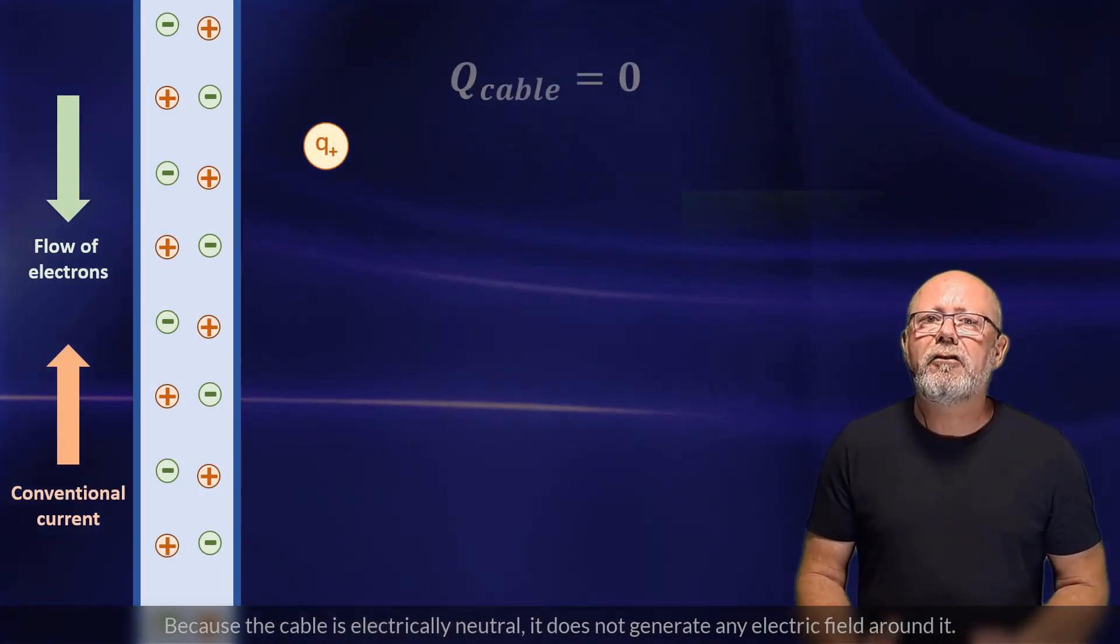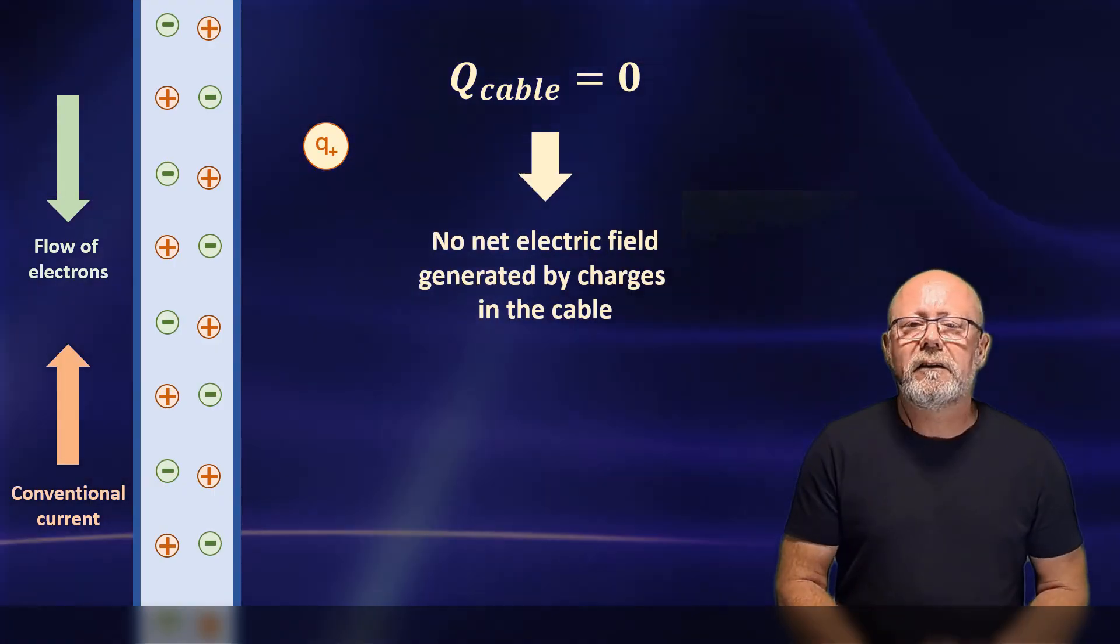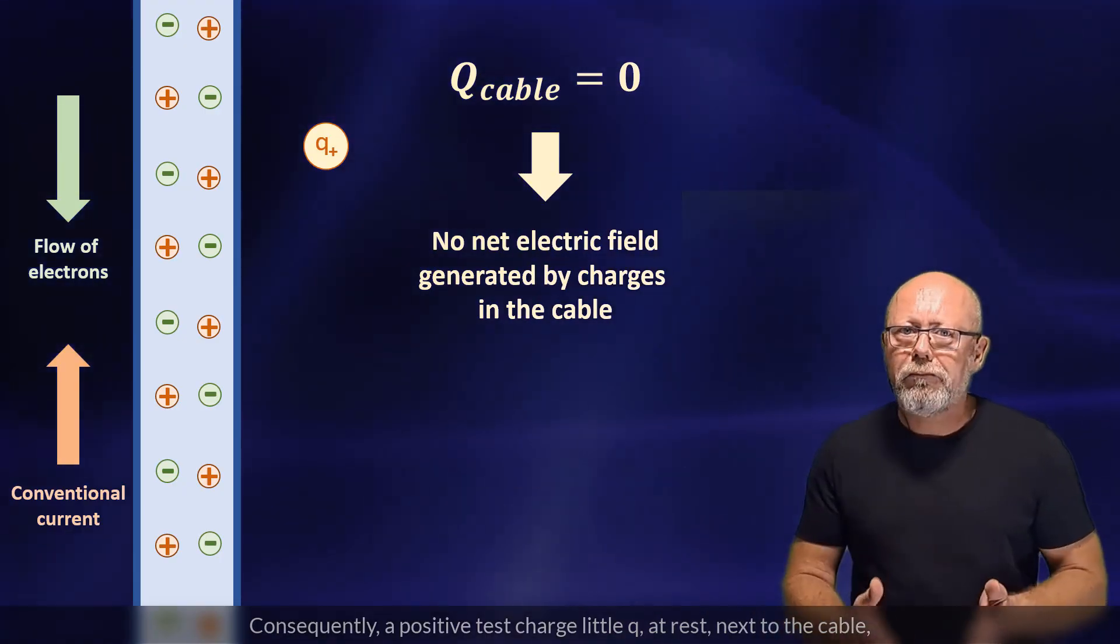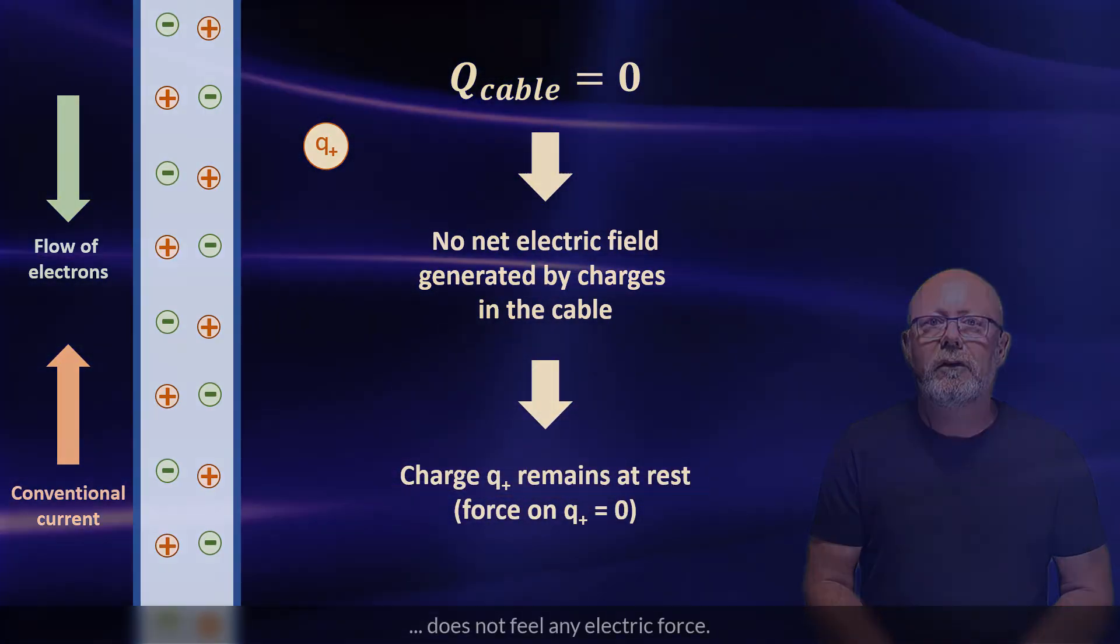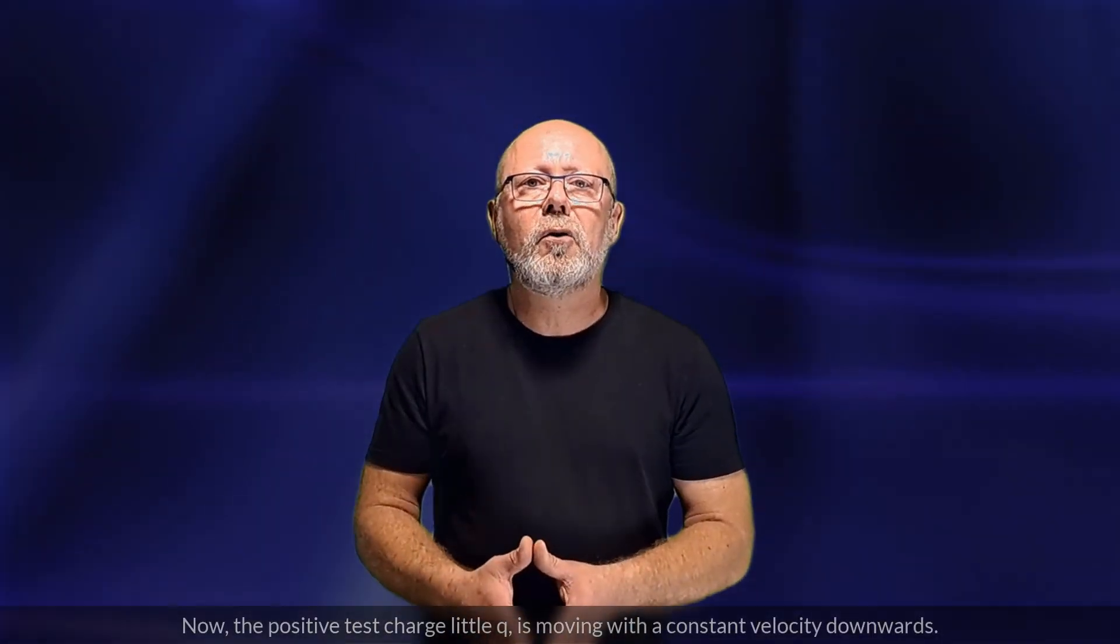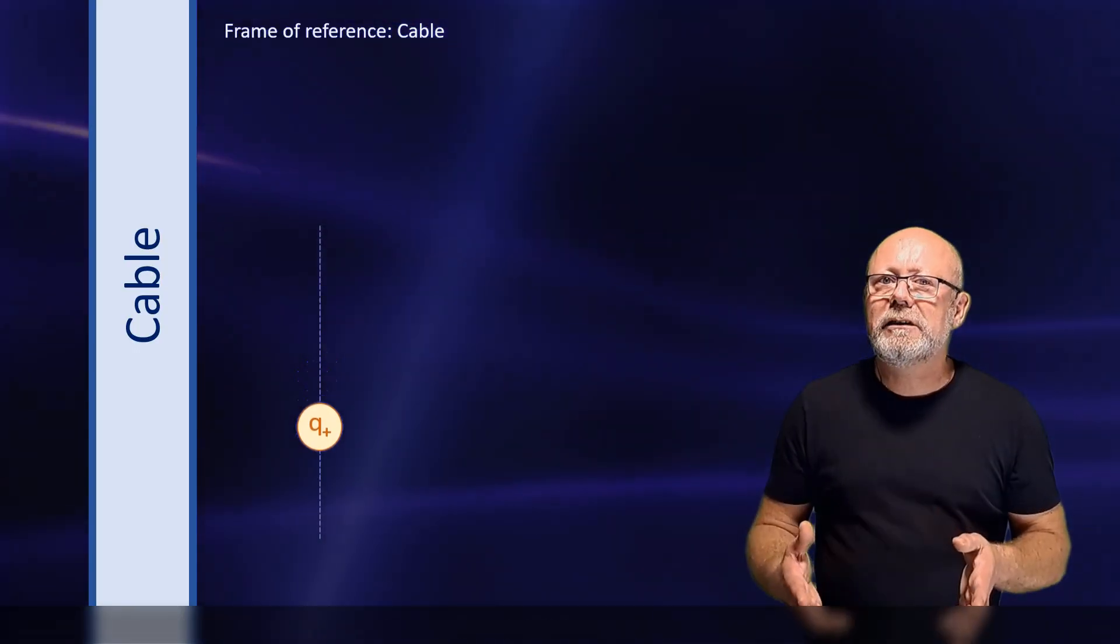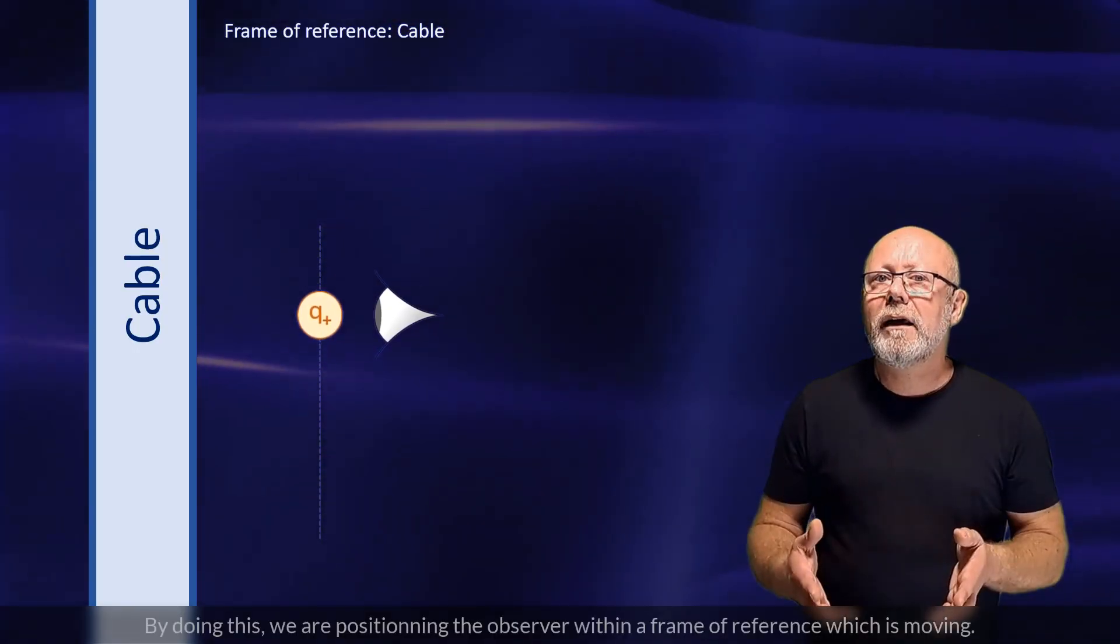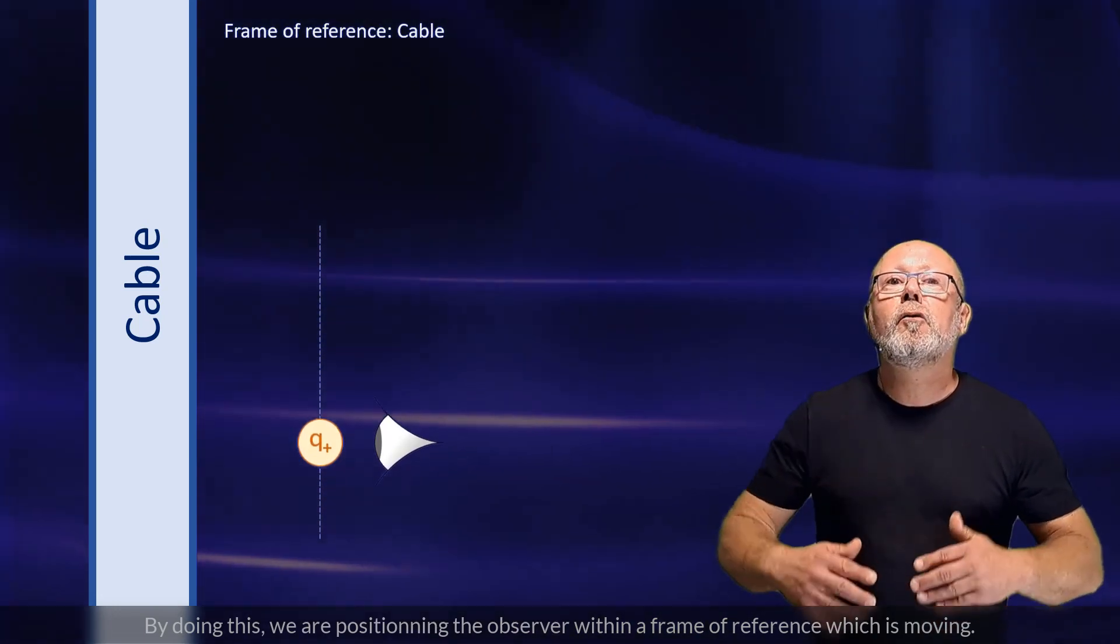Because the cable is electrically neutral, it does not generate any electric field around it. Consequently, a positive test charge, little q, at rest next to the cable, does not feel any electric force. Now, the positive test charge, little q, is moving with a constant velocity downwards. Let's position an observer moving at the same velocity as little q. By doing this, we are positioning the observer within a frame of reference which is moving.